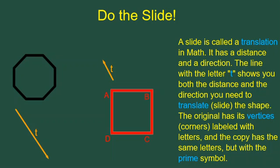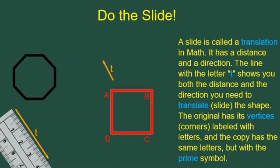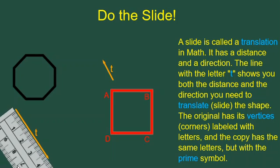A slide has a distance and a direction. For instance, with this black hexagon, the direction is sliding down towards the lower right, and the distance is 4 centimeters.